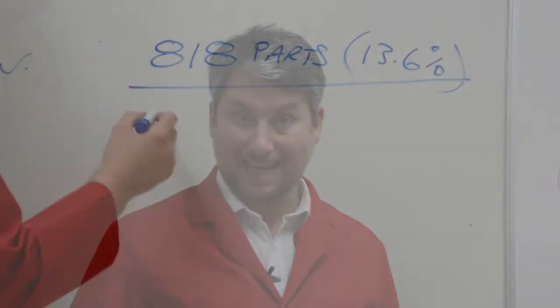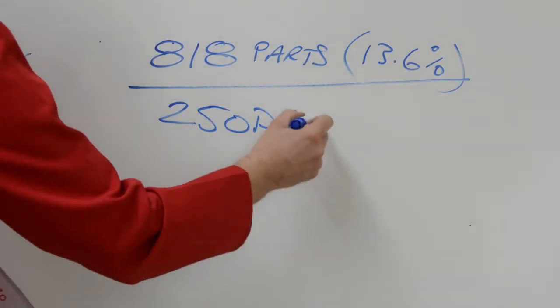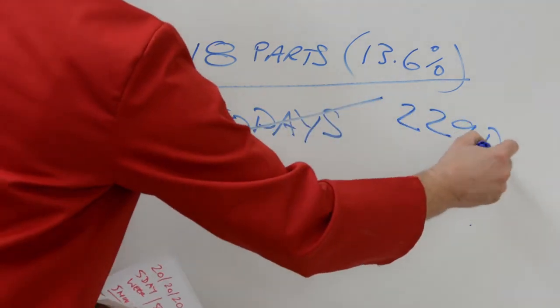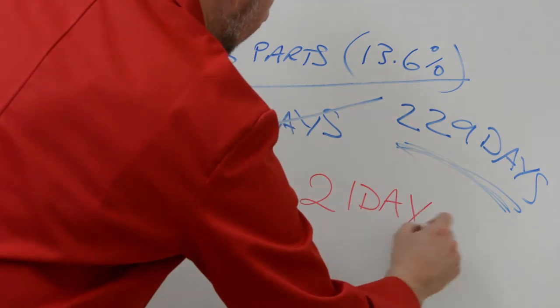6,000 parts at one hour per part will take you 250 days to make. If they now take 55 minutes to make those 6,000 parts, you are going to have all those parts molded in 229 days. That's a saving of 21 days. That's a month's work.